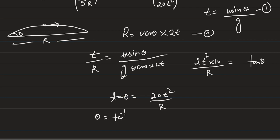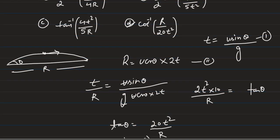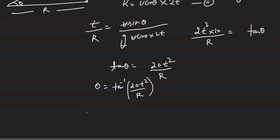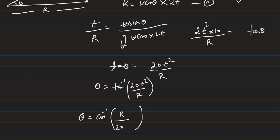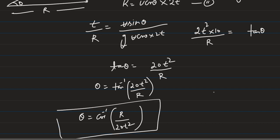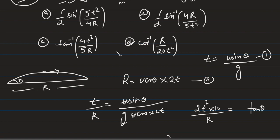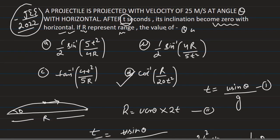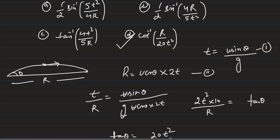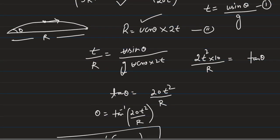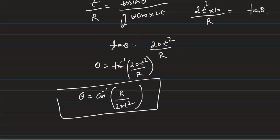From this, theta = tan⁻¹(20t² / R). Since the answer needs to be expressed in terms of cot inverse, we can rewrite this as theta = cot⁻¹(R / 20t²), which is option D. The key point is: after t seconds inclination becomes 0, meaning the projectile is at the highest point. We write expressions for t and R, take their ratio, do the math, and get theta in terms of cot inverse. Thank you.